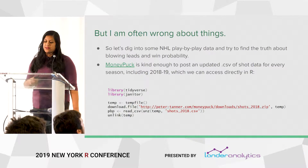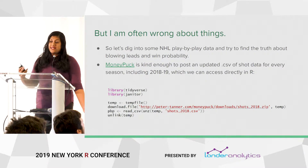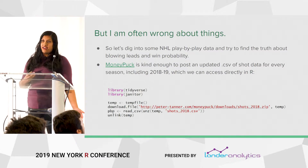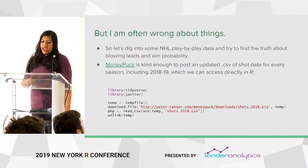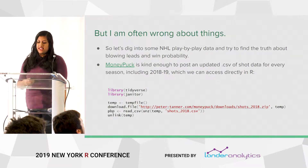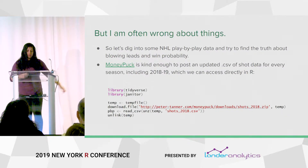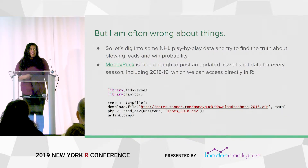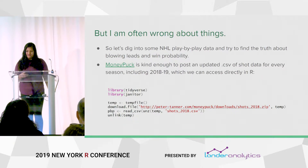MoneyPuck is a website run by Peter Tanner that posts an updated CSV of shot data — really any event in the play-by-play for every season, including the most recent one, 2018-2019, which we can access directly in R. I just threw up some code up there. I'm going to post it later, but if you run that, you will get every event from every game in the last season, which I think is pretty cool.